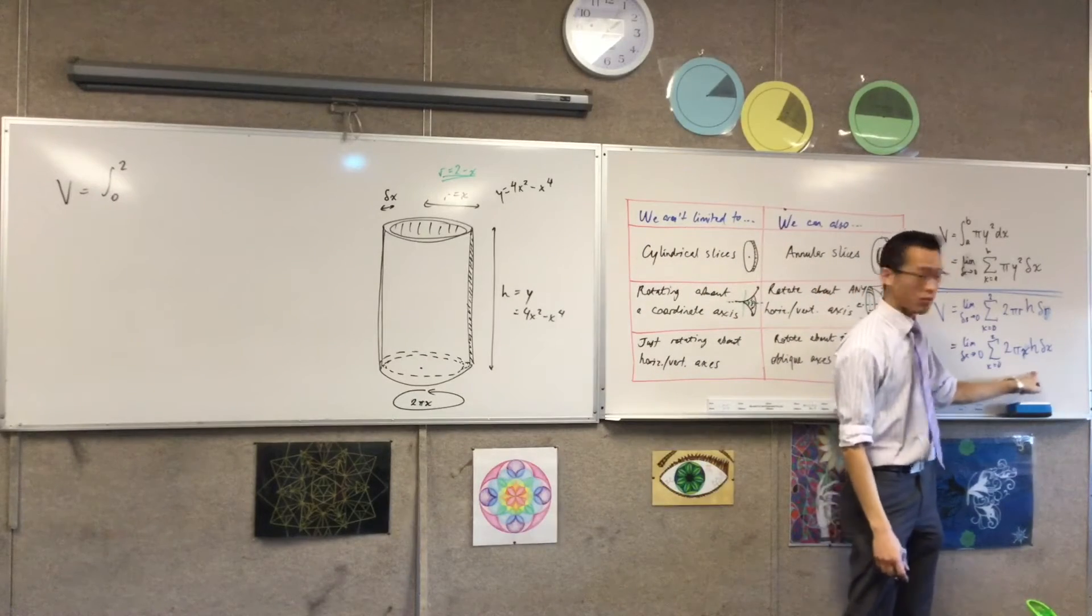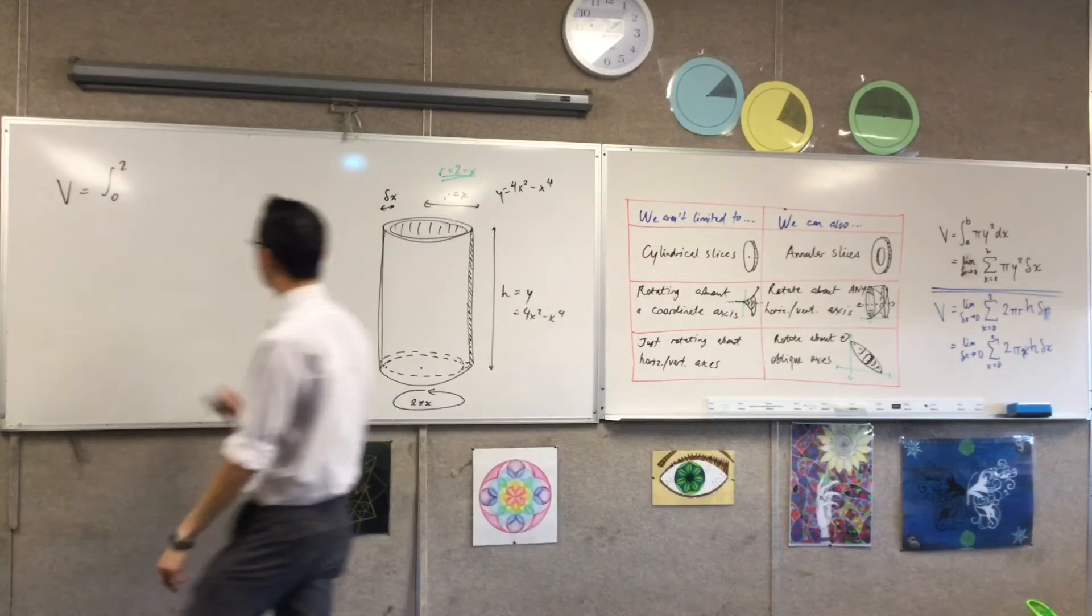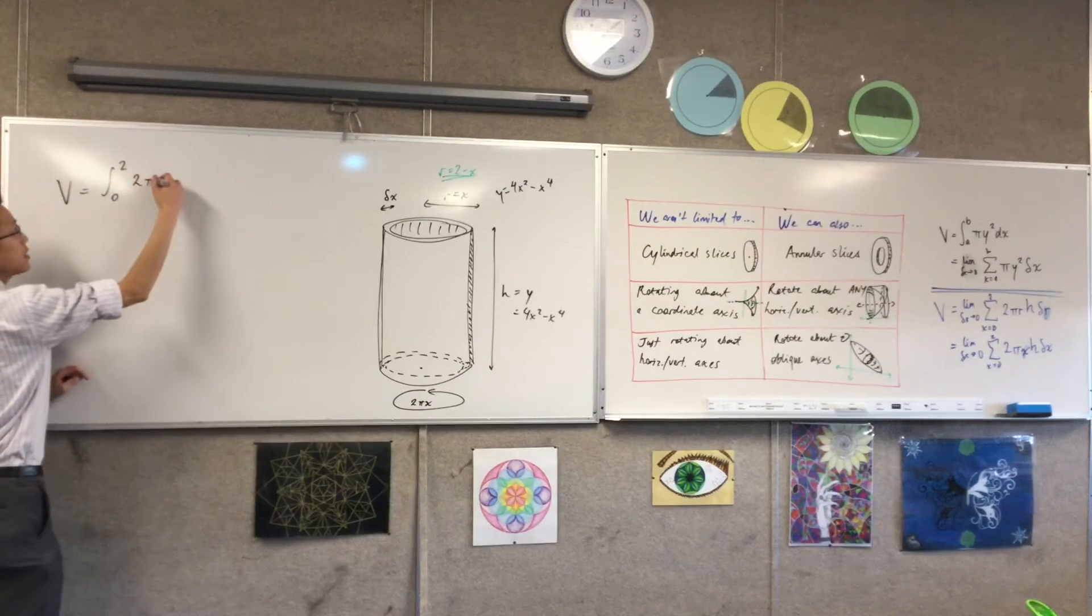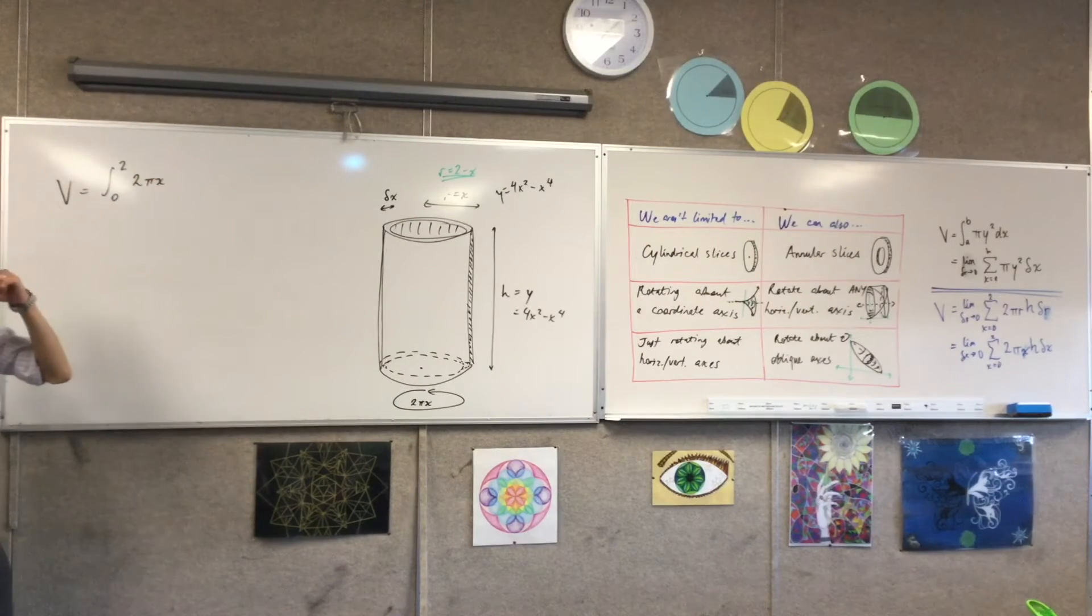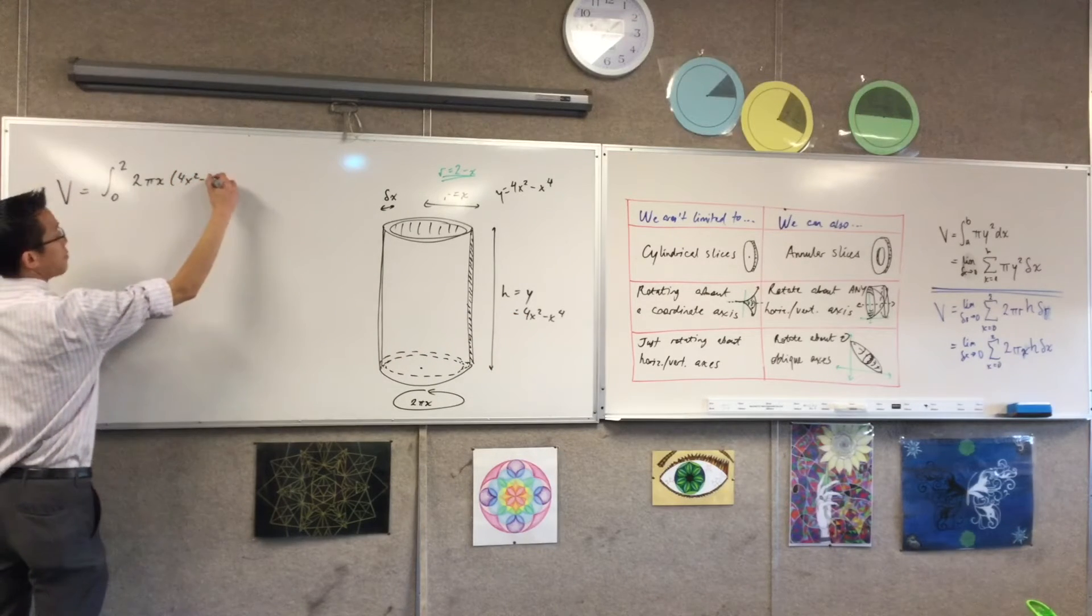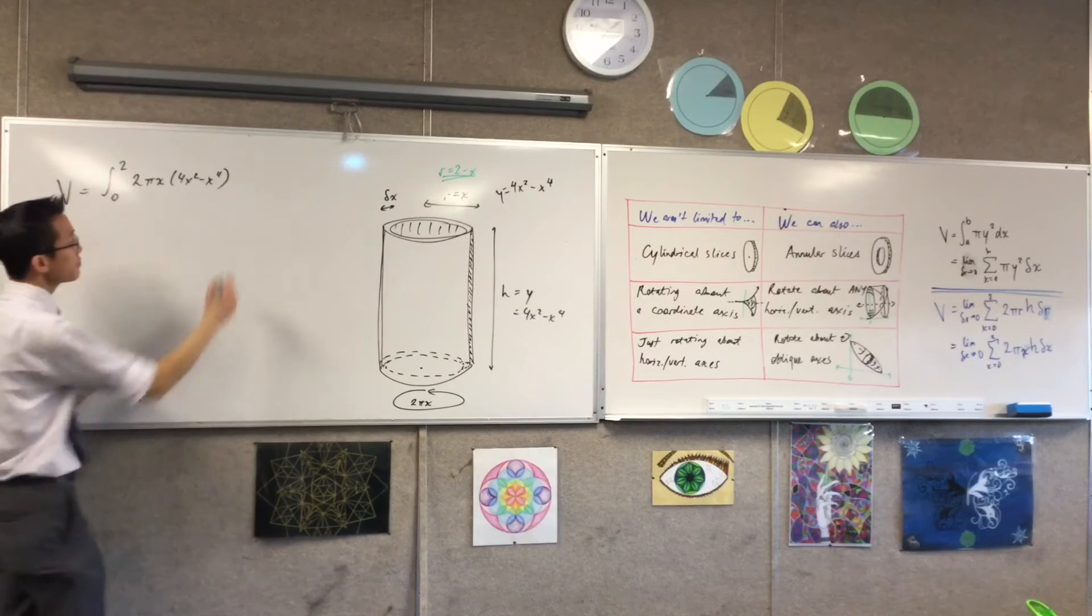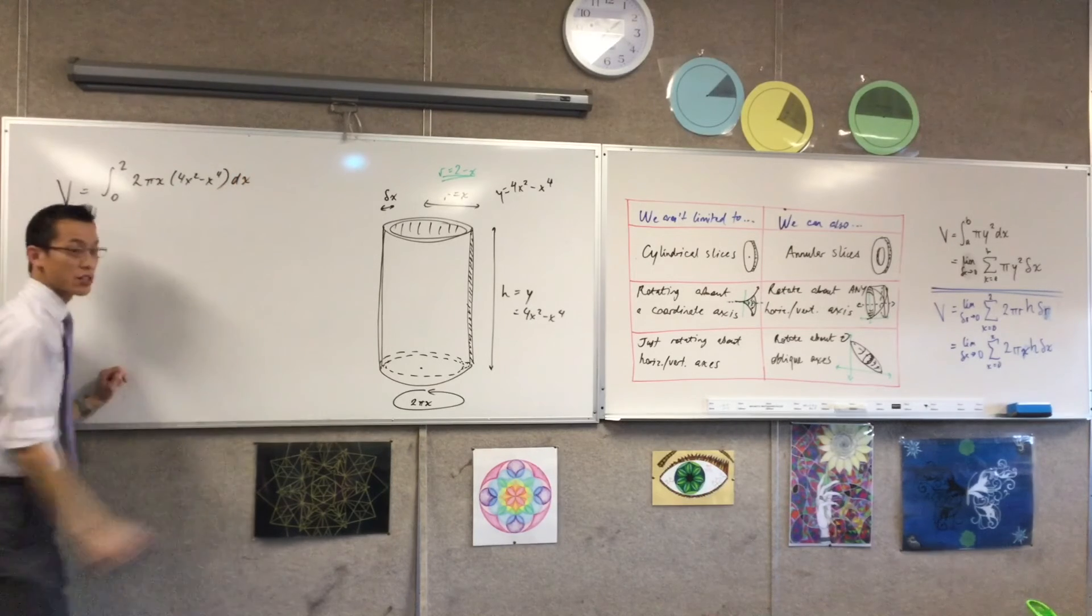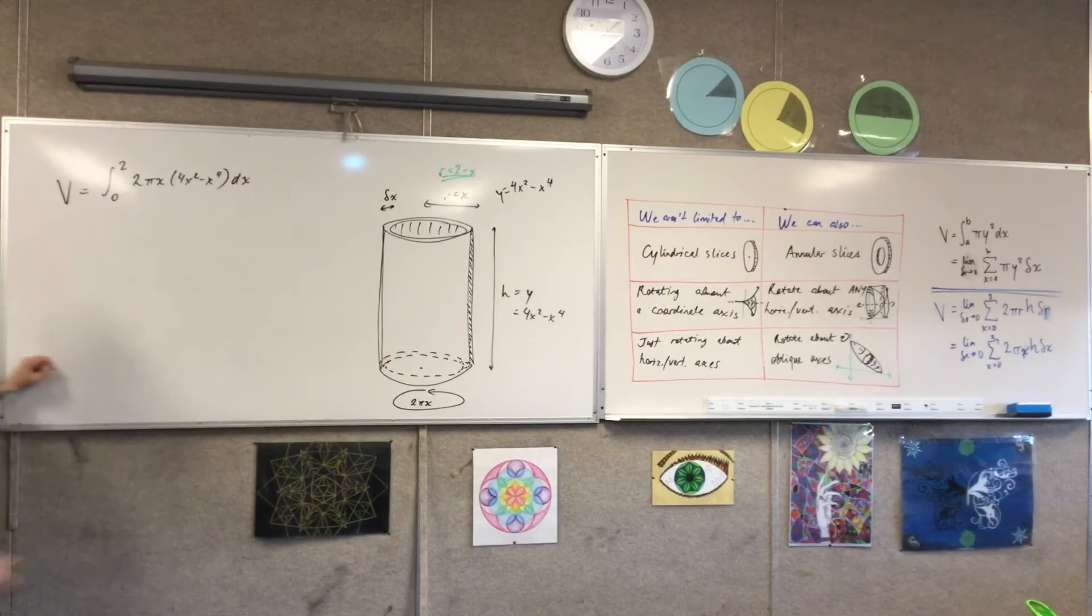This guy here. Now I'm ready to actually say, this is 2πx and I'm going to substitute in my h which is 4x squared minus x to the 4. And because I've turned this into an integral this is a dx now rather than delta x.